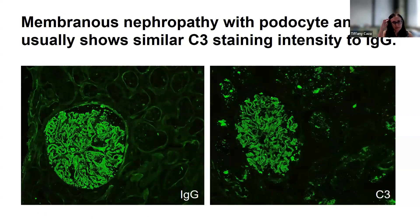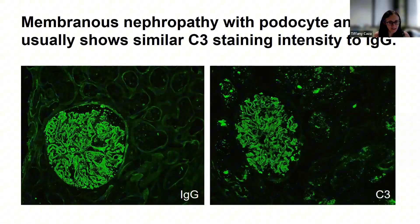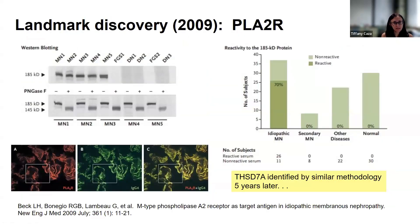Membranous nephropathy with podocyte antigens usually has similar intensity of C3 staining to IgG. This is important because some membranous antigens actually have less C3 staining, including the protocadherin antigens that will be discussed later.